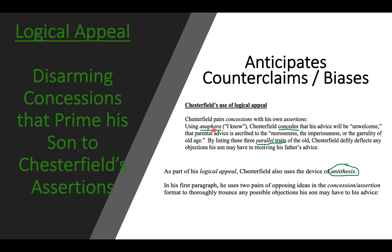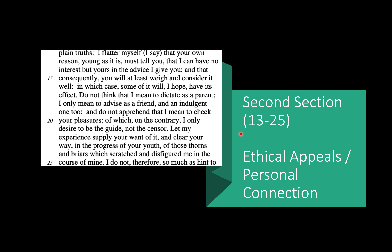Because he's anticipating the counter, the son is now more primed to hear his father — he knows his father understands that he doesn't really want to hear it. This parallel structure — paralleling the traits and conceptions of the old — deflects the objections the son may have to receiving his father's advice. This logical appeal comes in pairs: a concession and then an assertion. It's a pattern of 'I know this, I know that — but...' Right from the beginning, he anticipates his son's concerns, then deflates them and primes him for what he's about to say.